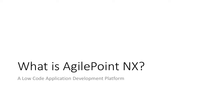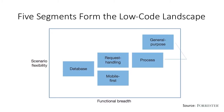With AgilePoint, you have the potential to create a fully functional application that will meet your needs without having to write a single line of code. Not all low-code platforms have been created equally. A study conducted by research firm Forrester has classified low-code development platforms into five different segments: database, request handling, mobile-first, process, and general purpose. Because AgilePoint is focused on workflow automation and system integration, it has been placed in the process segment classification.